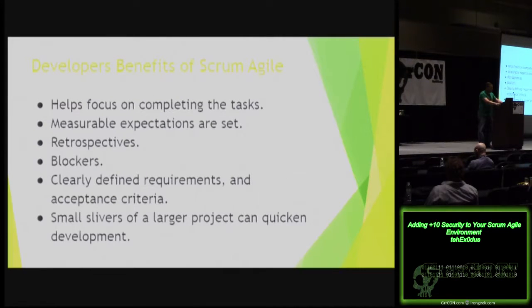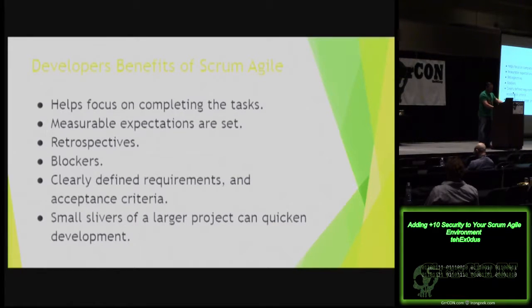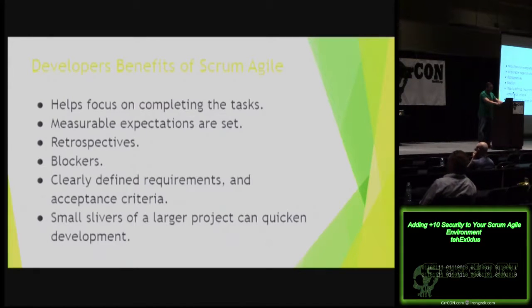After each sprint, in the retrospective, you look back and see if a task was grossly overestimated or underestimated — it helps keep measurable expectations in line. And because all those requirements and acceptance criteria are already defined when someone picks up a given task, you're not going to have scope creep. As tasks are completed, you have small slivers of the entire project start to layer on, and you begin to see the completion of the larger project without an open-ended date.